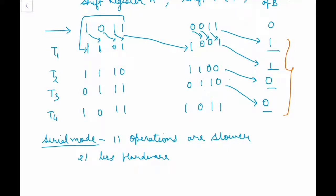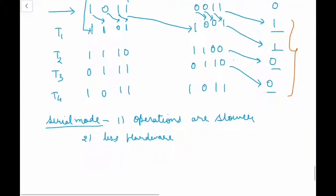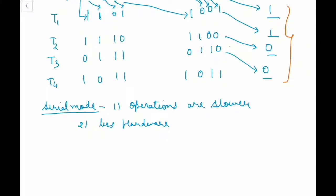In serial mode, one circuit can be used over and over again to manipulate the bits coming out of the register. The time interval between clock pulses is called bit time, and the time required to shift the entire contents of a shift register is called word time. In parallel mode, control signals are enabled during one clock pulse only and transfers occur upon application of a single clock pulse. Most computers operate in parallel mode because it is a faster mode of operation.